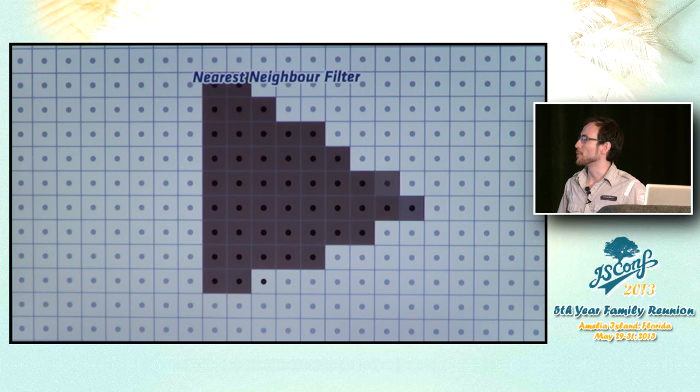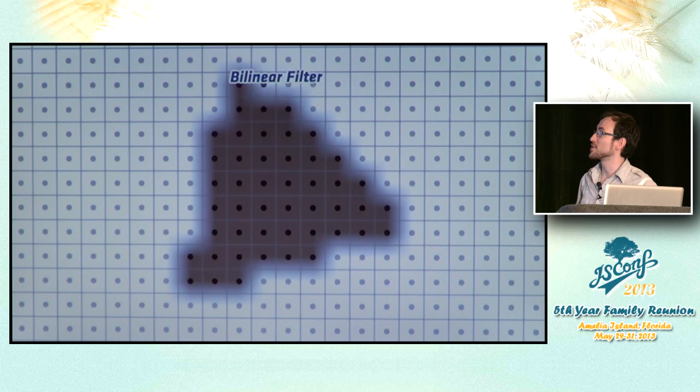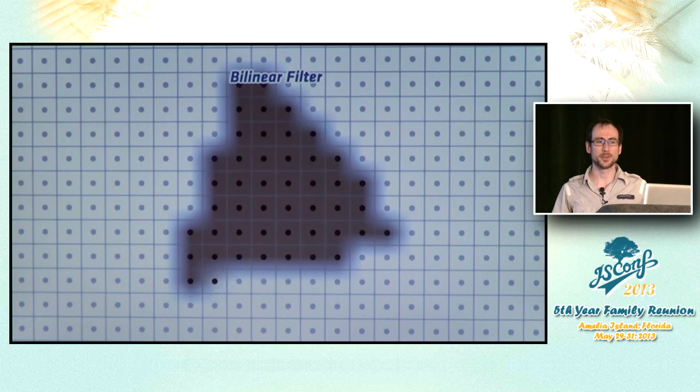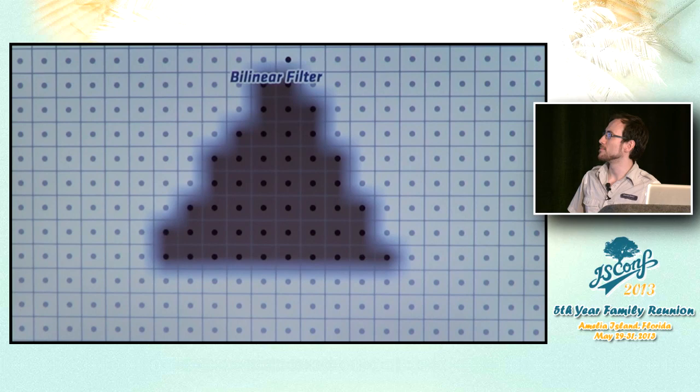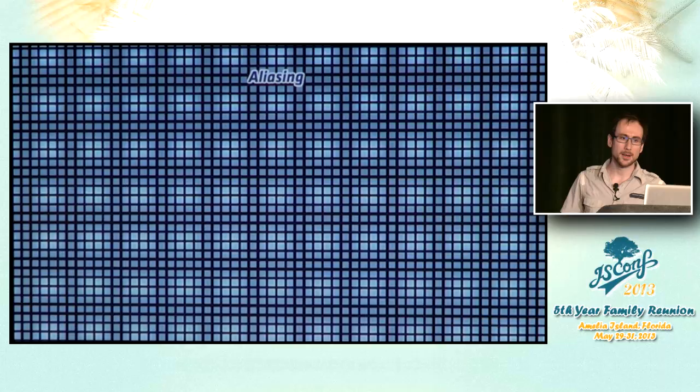This pixelated result is ugly. A better way is to use a bilinear filter, where you add gradients between pixels to even it out. What's important is that the color information is not on the edges of the pixel grid — it's in the middle. The edges of the pixel are a distraction; they don't factor in here.